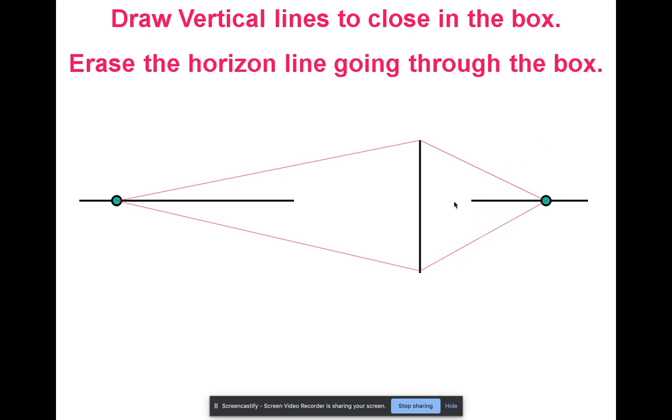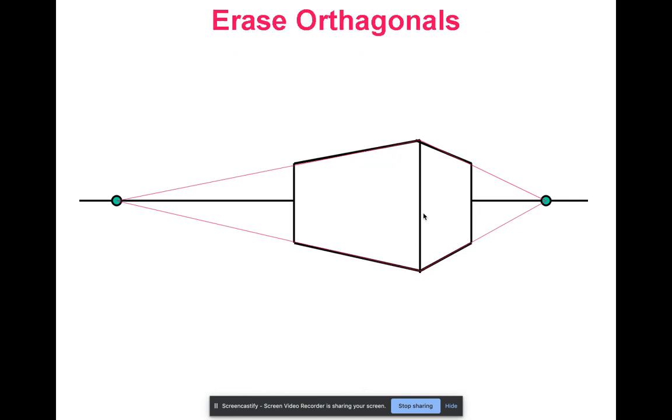Notice also that I have erased my horizon line that goes through my box. And then you can erase the extra lines, the extra orthogonals, and move on from there.